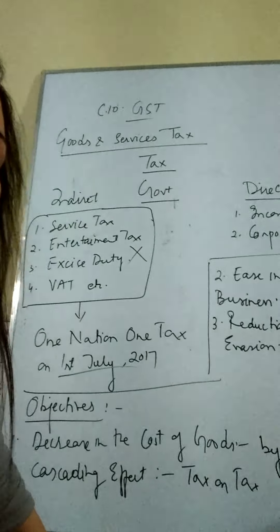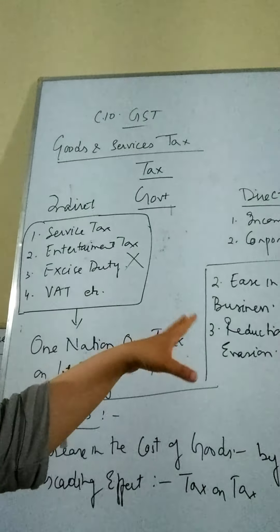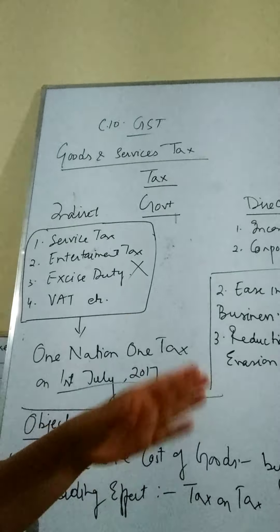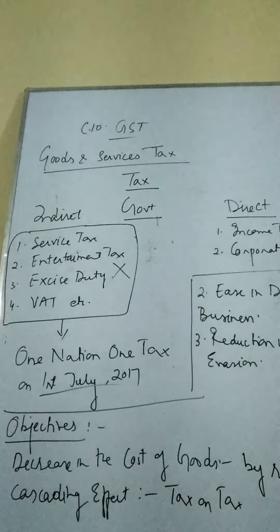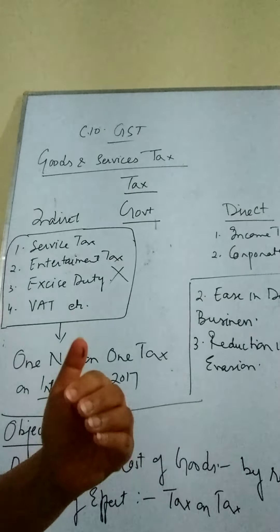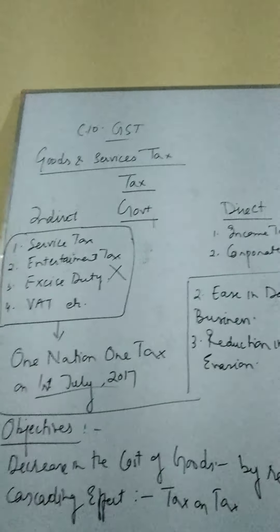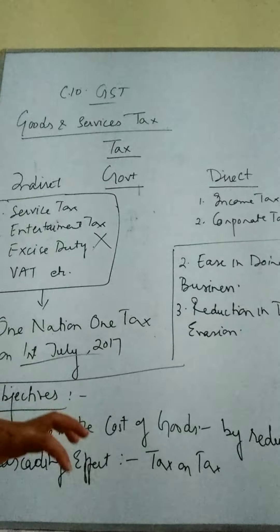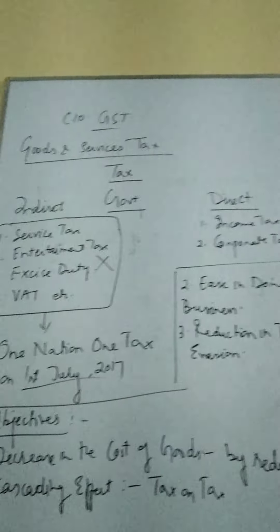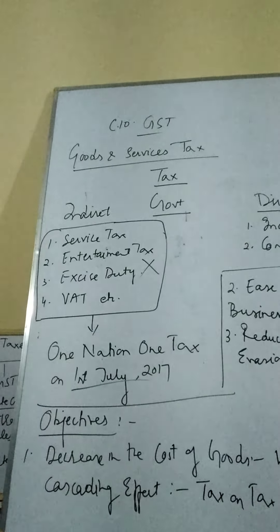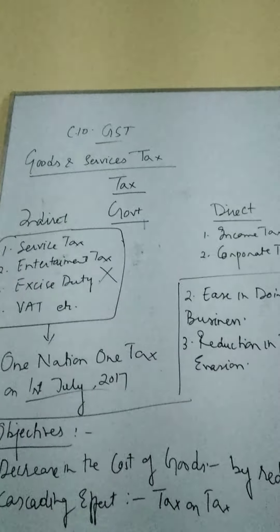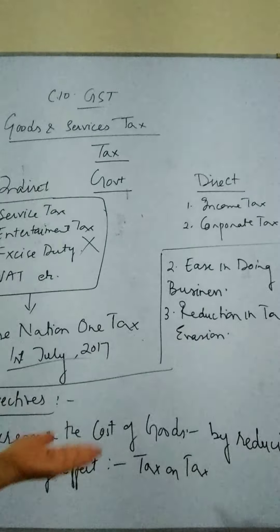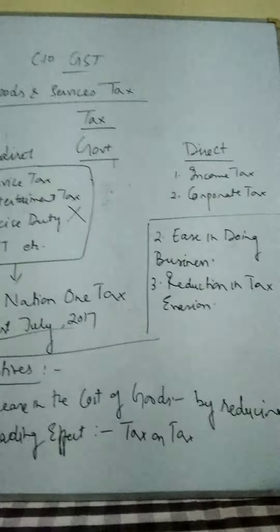For example, at the first stage the product passes from the manufacturer to the wholesaler — taxes levied. Then from the wholesaler to the retailer — again taxes charged. Then from the retailer to the consumer — again taxes charged. This way there was multiple taxation on one commodity. The objective of introducing GST is to reduce this cascading effect, or tax-on-tax effect, in order to avoid the multiplicity of taxes.